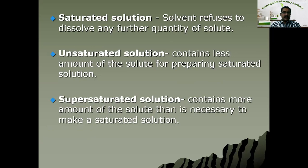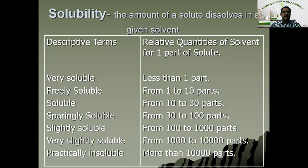Let us discuss the descriptive terms used for solubility. When you describe any substance or chemical, we describe it in terms of the solubility of that substance. Solubility is the amount of solute dissolved in a given solvent. Based on the relative quantity of solvent required for one part of solute, we describe solubility using certain terminologies. Very soluble means less than one part of solvent is required for one part of solute — equal parts of solute and solvent will dissolve.